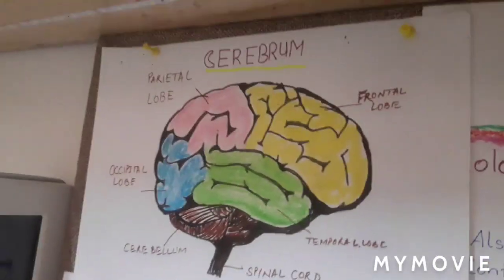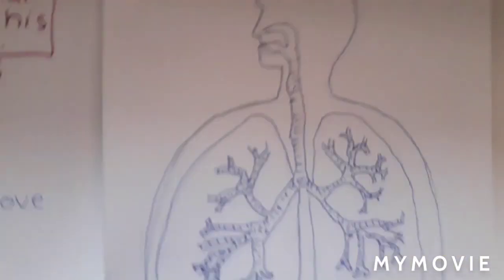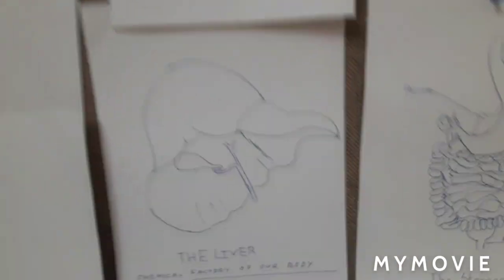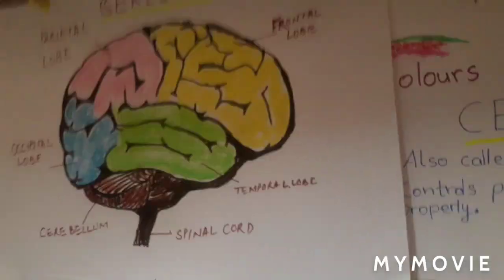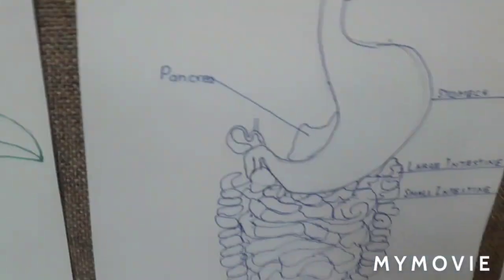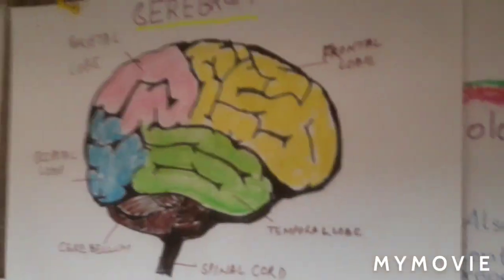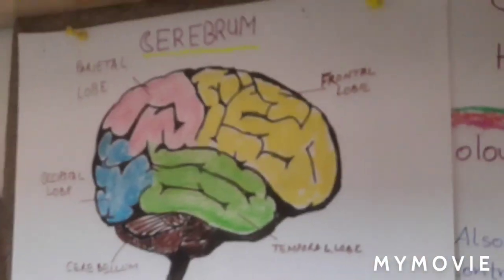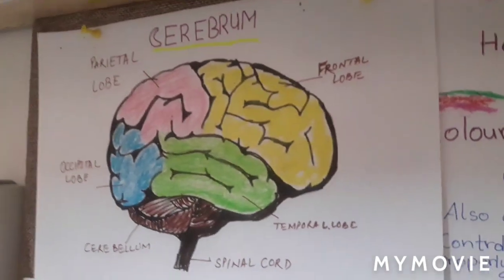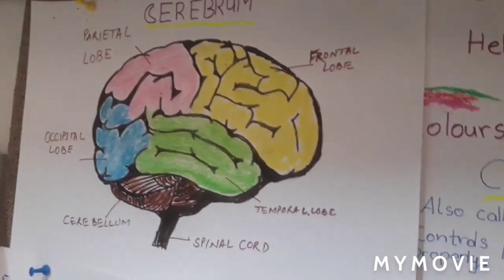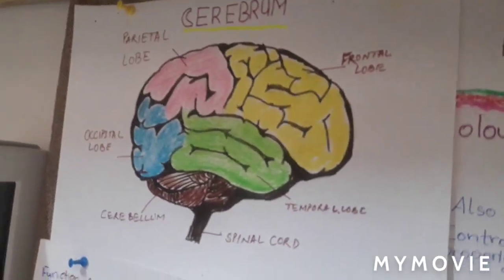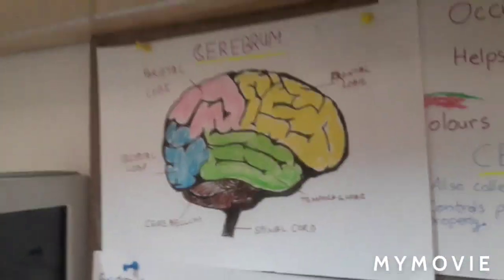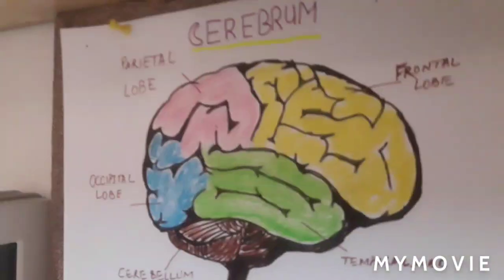Welcome friends! Today we are going to learn about parts of the brain, lungs, stomach, and liver. I'm Sandy, and this is Human Body Part 2. Please like and subscribe so this can reach other people, and join my Discord — the link is in the description. Now let's start!